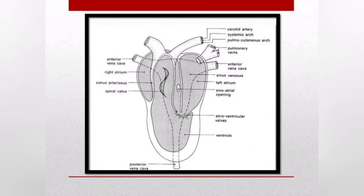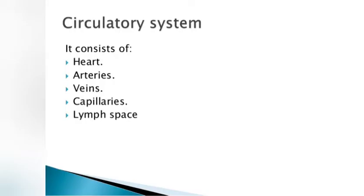The circulatory system contains the carotid artery, systemic artery, pulmonary cutaneous artery, anterior vena cava, posterior vena cava, right atrium, left atrium, sinus venosus, conus arteriosus, spiral valves, and sinoatrial opening.